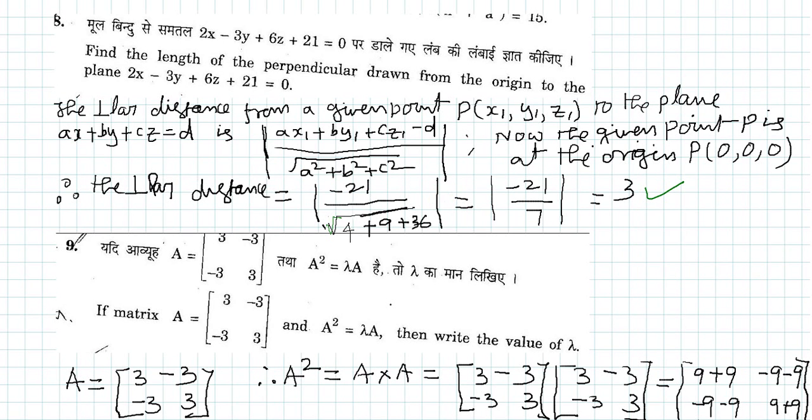...a square plus b square plus c square where a is 2 so a square is 4, b is minus 3 so b square is 9, and c is 6 so c square is 36. So that is equal to minus 21 by 7...